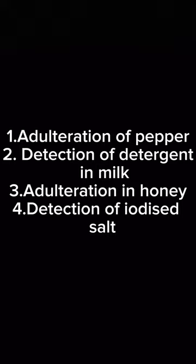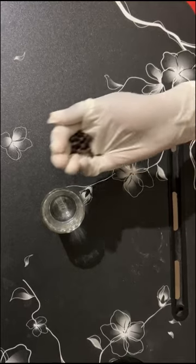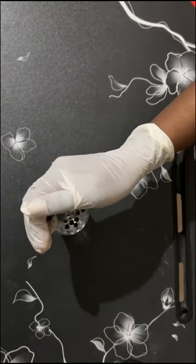Here in this video, I would like to show many adulterations which are done in common products that we use in our daily life. In this video, adulteration of pepper, detection of detergent in milk, adulteration in honey, and detection of iodized salt is shown.